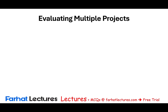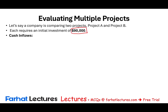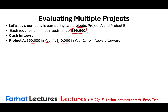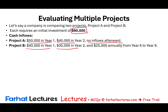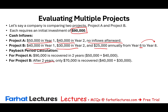How about multiple competing projects? A company is comparing Project A and Project B, each requiring an initial investment of $90,000. Project A has cash inflows of $50,000 in year one and $90,000 in year two. Project B has $40,000 in year one, $30,000 in year two, then $25,000 annually from year six to year eight. Using the payback period, Project A recovers its money in year two, which is faster than Project B, so the company would choose Project A.